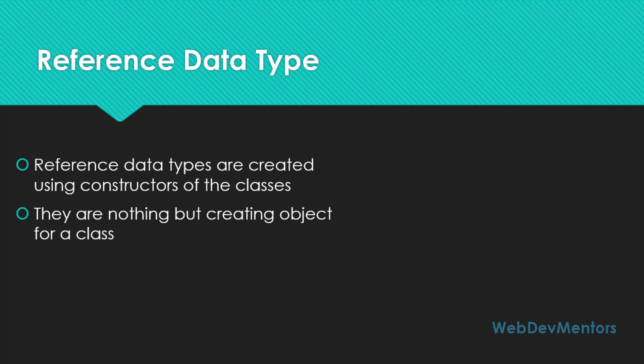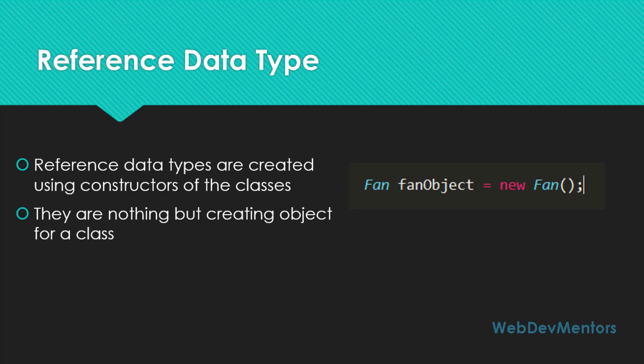When you create an object for a class, that is called a reference object. So if you're referencing a class using an object, that is called a reference data type. For example, you create a Fan class object — that Fan object is the reference object, which is an object of the Fan class. We have seen this in the previous video where I gave an explanation of what an object is.